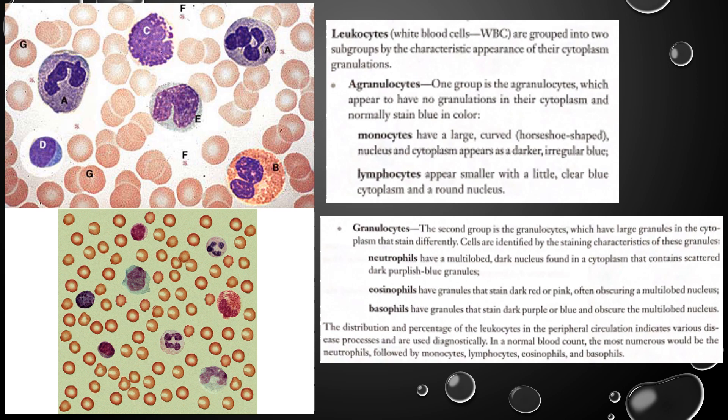A large percentage of monocytes get stored in other organs of the body, specifically like the spleen. Looking at the picture on the left, think about which one has the horseshoe-shaped nucleus, but yet the cytoplasm is kind of blue and not real grainy. The one that matches this description is letter E. So letter E is going to be my monocyte — from the subgroup agranulocytes — and it's one of my white blood cells.